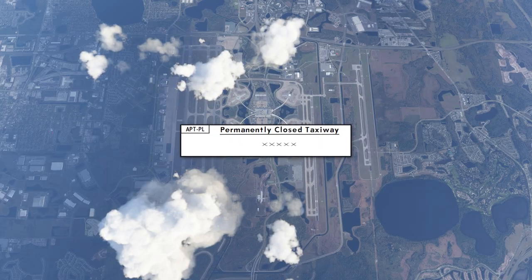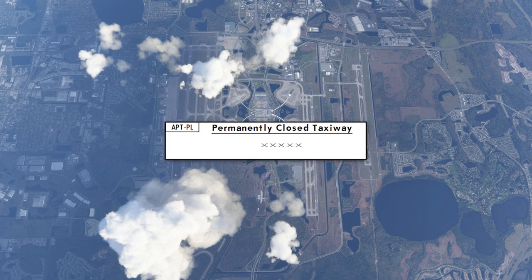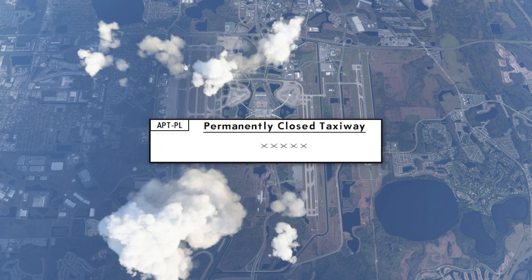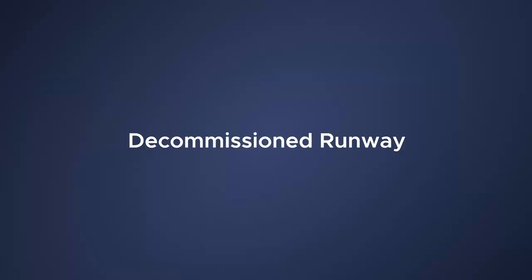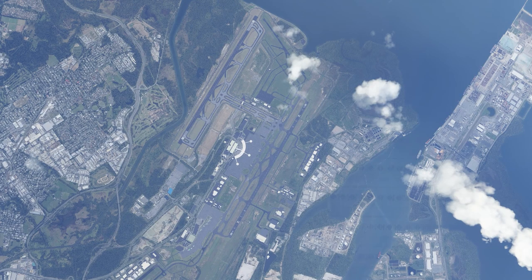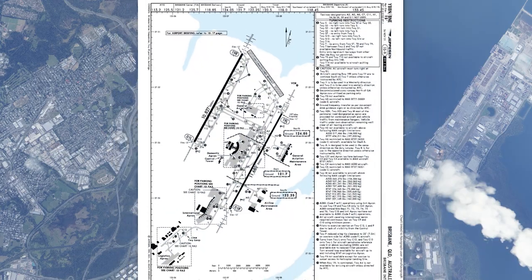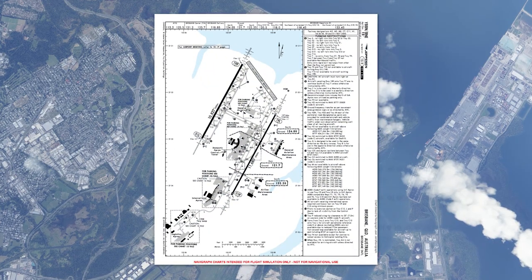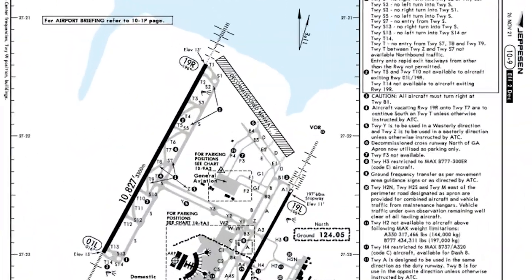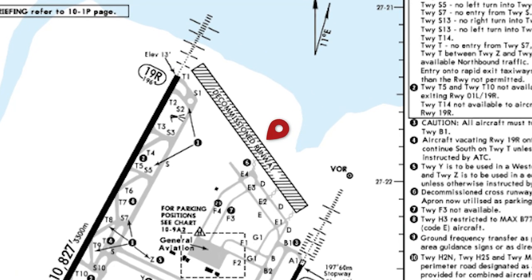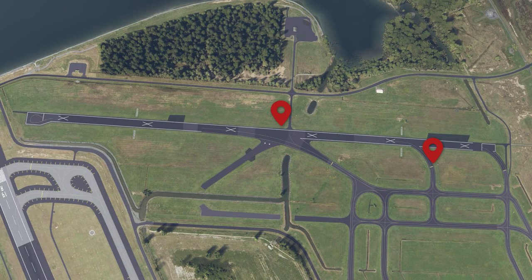Let's take a look at what permanently closed taxiways look like — they're depicted with a bunch of X's. As you can see on this chart, the X's indicate a permanently closed taxiway. Going to Brisbane, Australia, we can see a decommissioned runway with taxiways marked by X's — that means those taxiways are no longer in use.